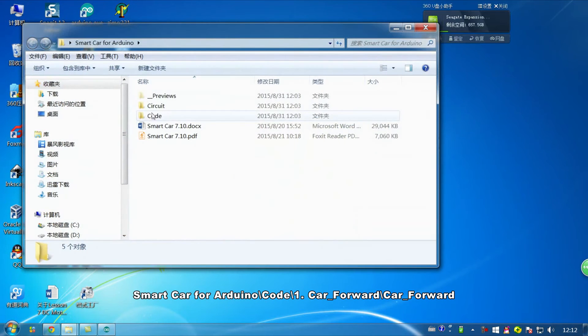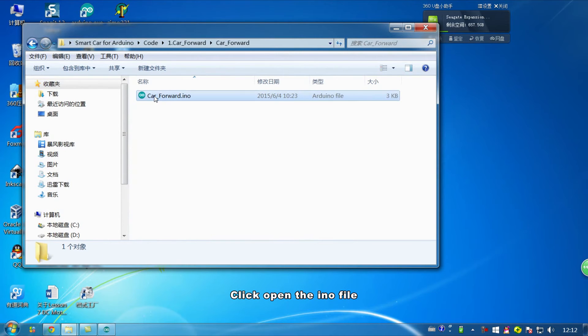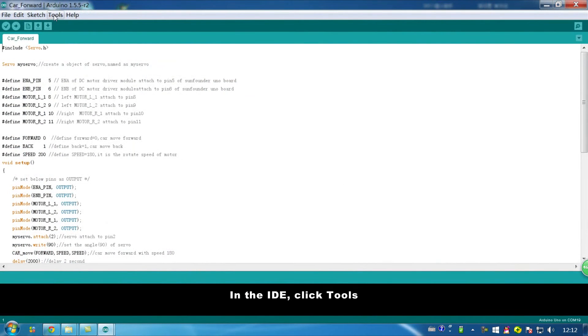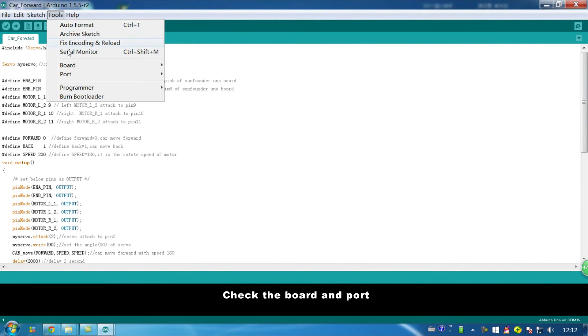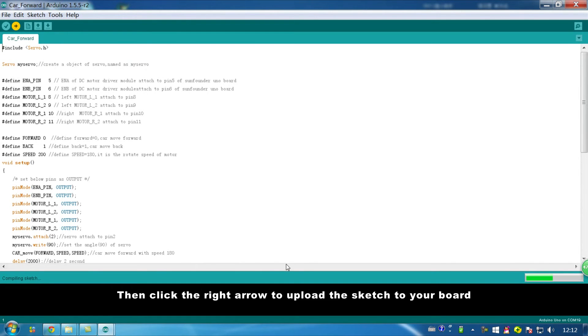Then go through the path Smart car for Arduino, Code, 1. Car forward, Car forward. Click open the ino file. In the IDE, click Tools. Check the board and port. Then click the right arrow to upload the sketch to your board.